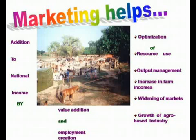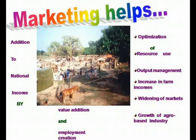States coming forward to undertake such reforms should be encouraged, because marketing helps in addition to national income by value addition and employment creation, optimization of resource use, optimization of farm incomes, widening markets for produce, and growth of agro-based industry. Other than marketing, insurance is another factor which is very urgently needed to be addressed as a part of the tool for financial inclusion. Since agriculture is a high-risk economic activity, credit without insurance is hazardous.